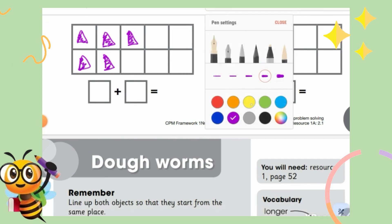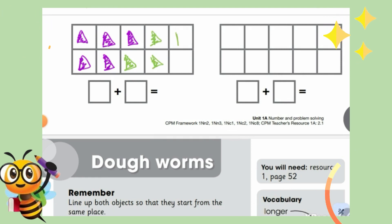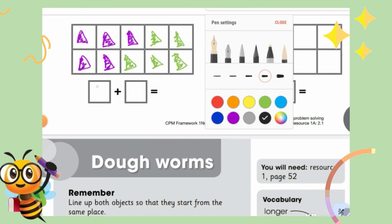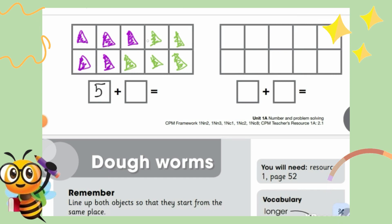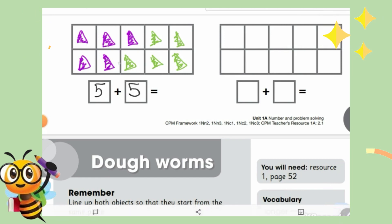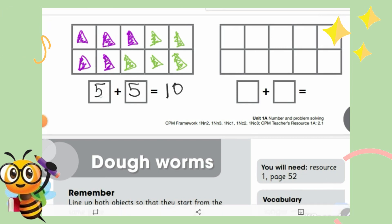Now choosing another color — green. Five green triangles: one, two, three, four, and then five. Let's count: five purple triangles, and then one, two, three, four, five green triangles. How many are they altogether? Ten. Very good. How do you know? Because five plus five makes ten. Very nice.